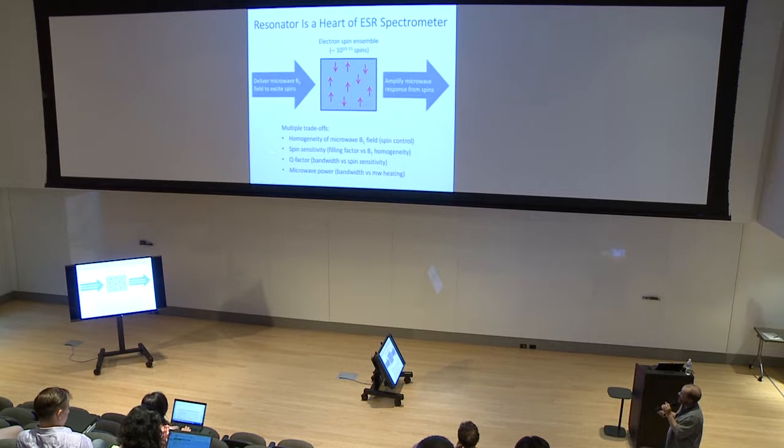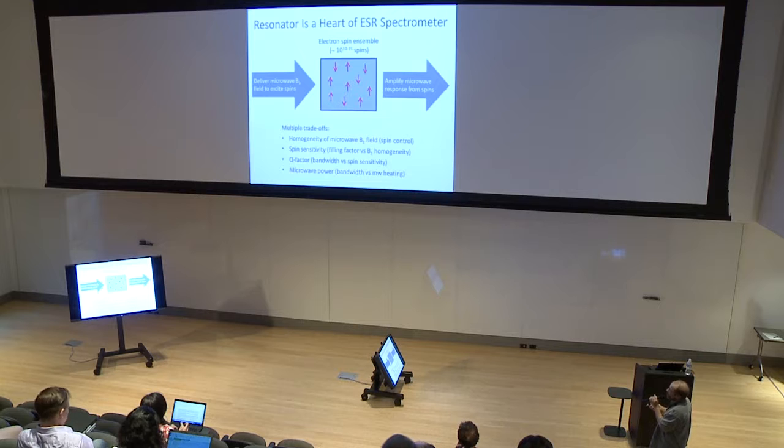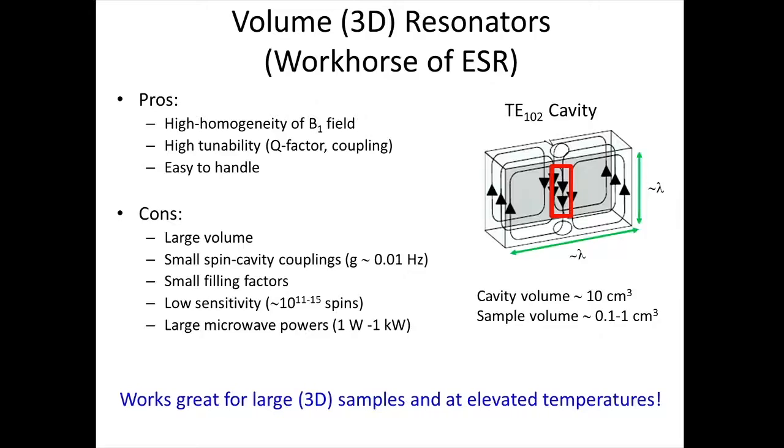Electron spin resonance deals with a large ensemble of spins. Typically, it is 10 to 15 spins. They are placed inside the resonator, which I show here as a square randomly with arrows up and down, our spins randomly placed in the resonator. Resonators play a dual role. One is it is used to deliver microwave B1 field to excite our spins. Second, it is probably more important, is to amplify the microwave response from the spins. There are multiple trade-offs you face with when you think about resonators.